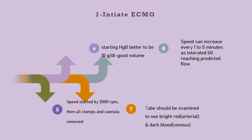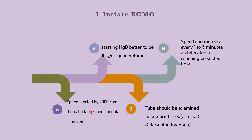The fifth step in starting ECMO: speed should be started at 2000 RPM. Then all clamps on the cannulas are removed. Hemoglobin should ideally be 10 g/dL and good volume should be given. Tubing should be examined — the bright red thread is arterial and the dark blood should be venous.